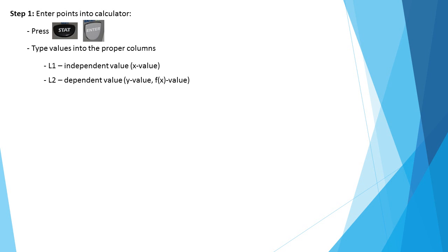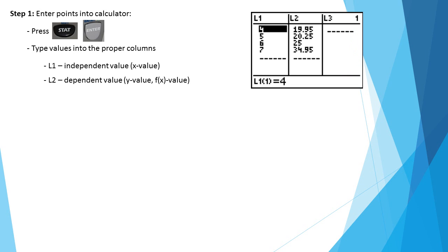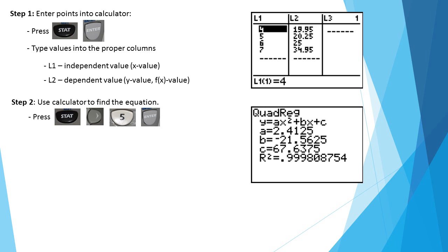Press stat and enter and enter your values in each of the columns. L1 has four, five, six, and seven. L2 has 19.95, 20.25, 25, and 34.95. From there we hit stat, right arrow, five, enter. It's going to calculate our quadratic. Your screen will say quadratic regression and give you standard form y equals ax squared plus bx plus c. It gives you a, it gives you b, and it gives you c. Now you need to write those values in the quadratic on your paper. I rounded everything to two decimal places. That is your quadratic function.